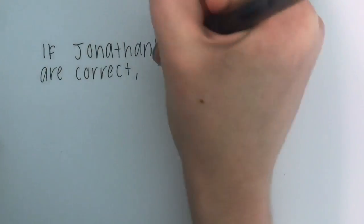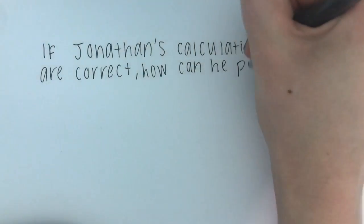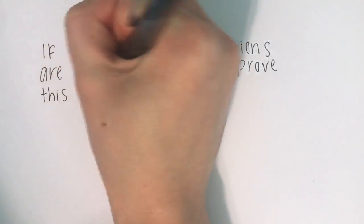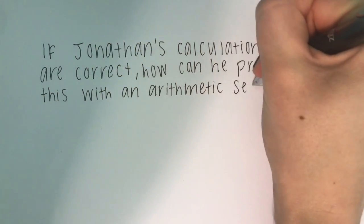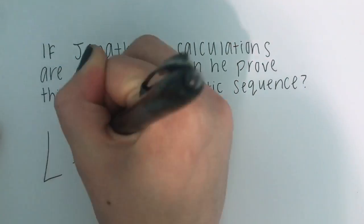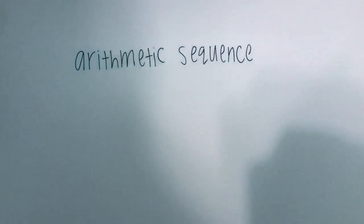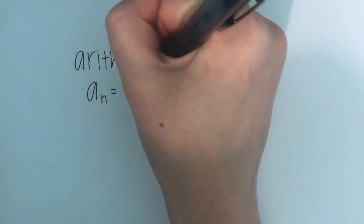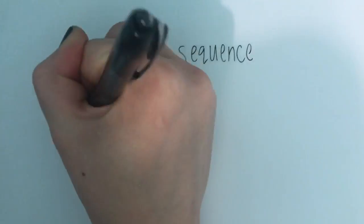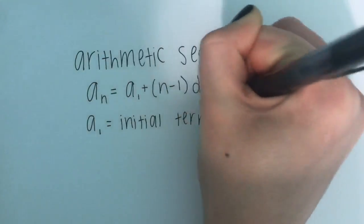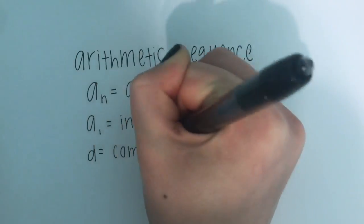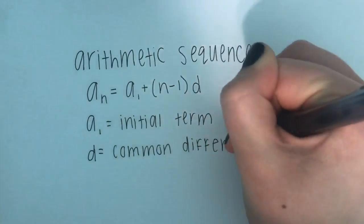If Jonathan's calculations are correct, how can he prove this with an arithmetic sequence? In order to solve this, we first have to know the formula for an arithmetic sequence. The formula is a sub n equals a sub 1 plus (n minus 1) times d, where a sub 1 is the initial term and d is the common difference. That's what makes it an arithmetic sequence.